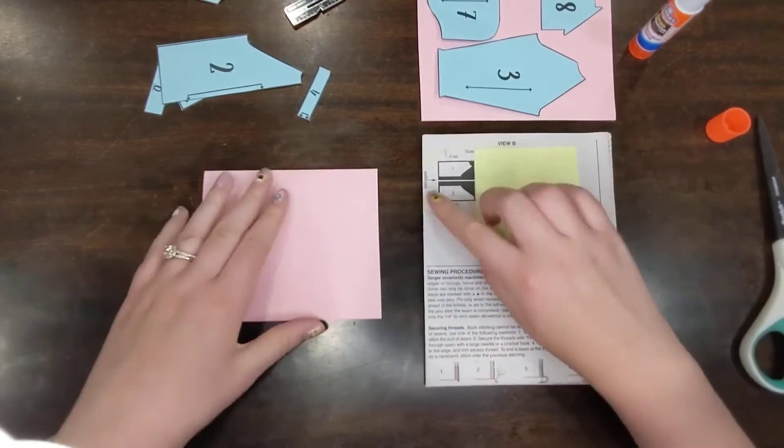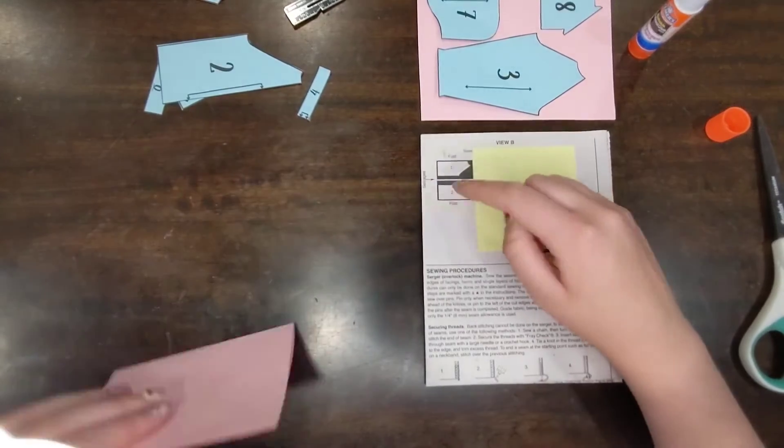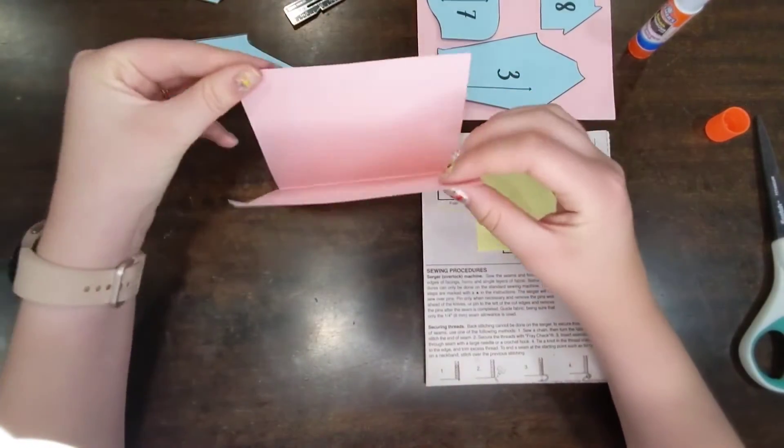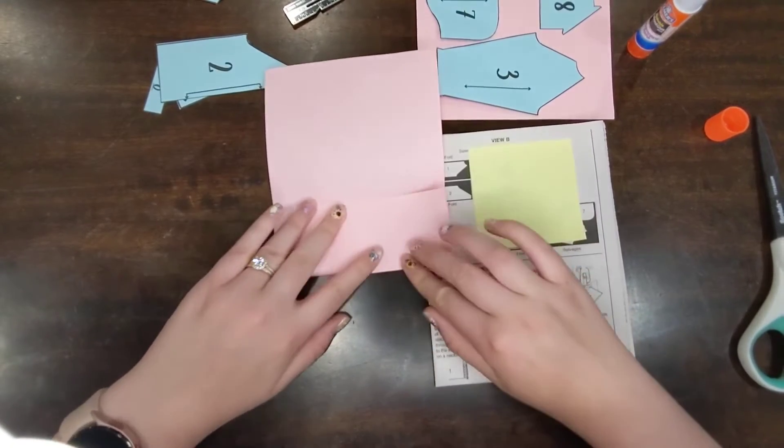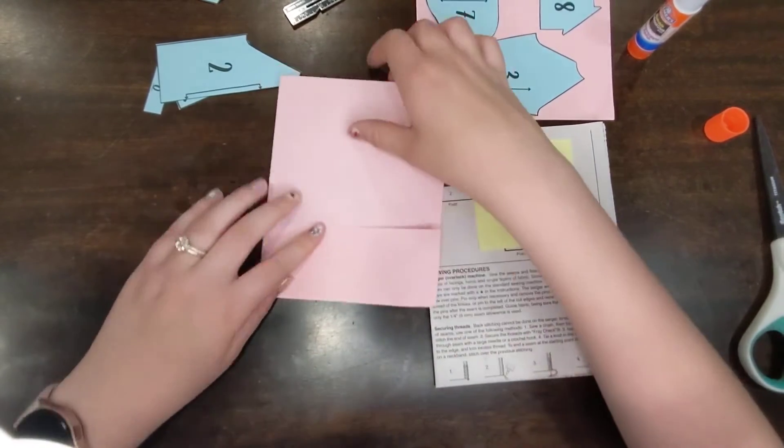It tells me I need a fold at the top and at the bottom and my selvedges need to be in the middle. So I'm going to take my two selvedges. They're going to meet in the middle, which will give me a fold on the top and a fold on the bottom.